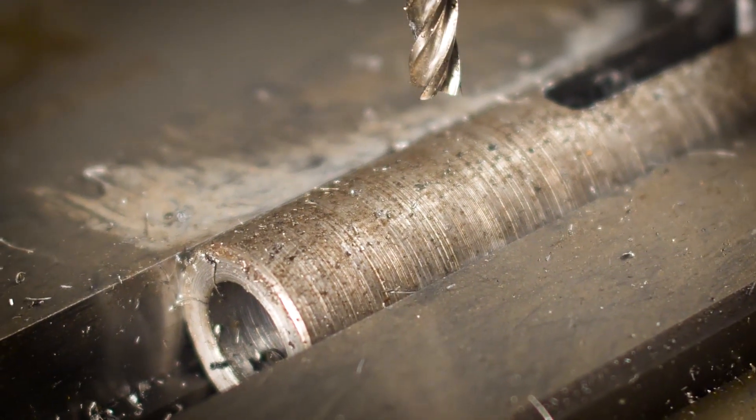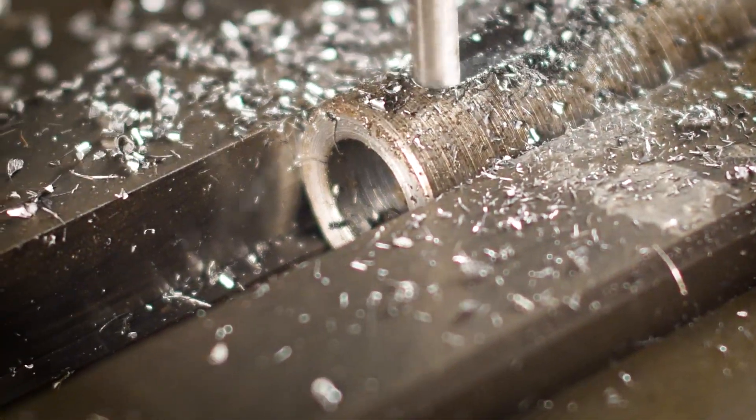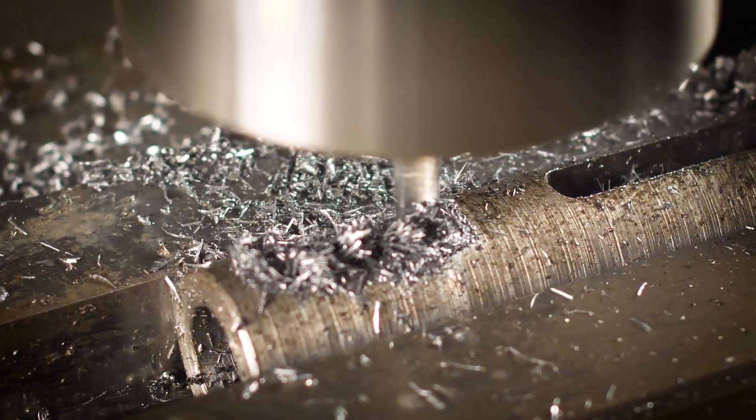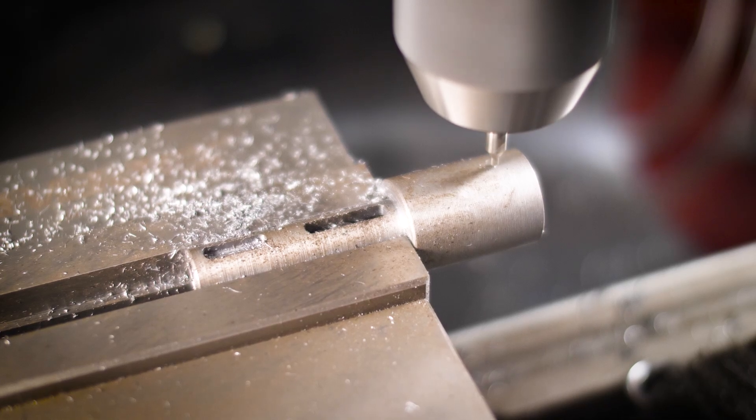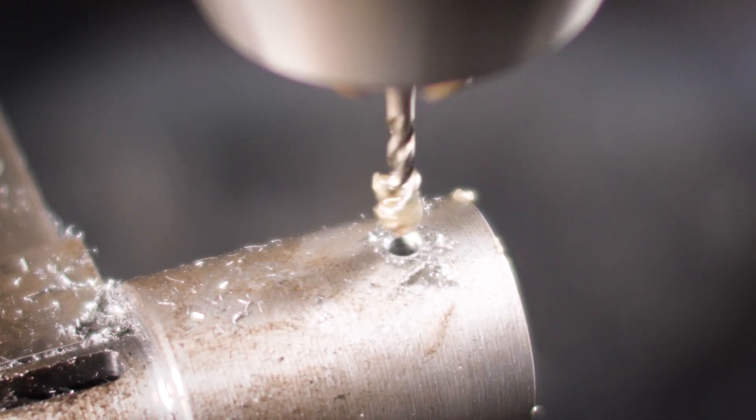The second slot is halfway through the thickness, and this is for a keyway and this will retain the handwheel. And to finalize, I need a tapped hole which will be used to retain this adapter onto the existing handwheel shaft on the machine.